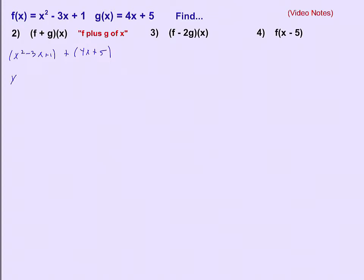We can then combine like terms. There's only 1x², but -3x plus 4x can be combined together, and 1 plus 5 can be combined together. And that's it. So the way we would answer our question in the end is we would say (f + g)(x) is equal to x² + x + 6. And that's the final answer.